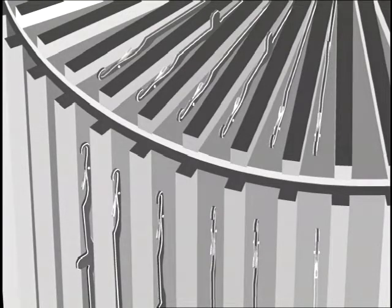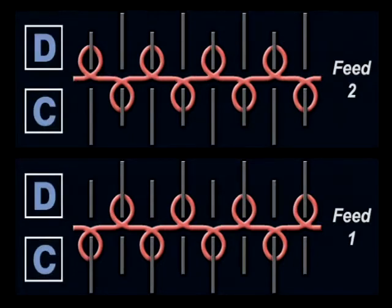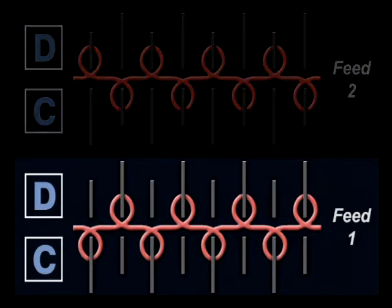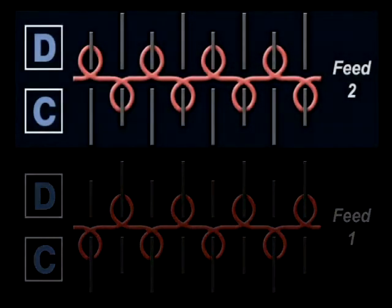Needles with long and short butts are alternately arranged in the cylinder and also in the dial. During each feed or course of yarn, only half the needles are used. On course one, only needles with long butt positions knit those placed in odd positions of the cylinder and even positions of the dial.